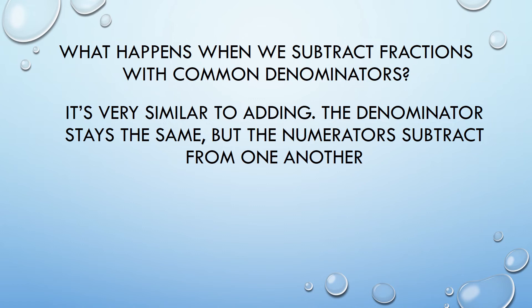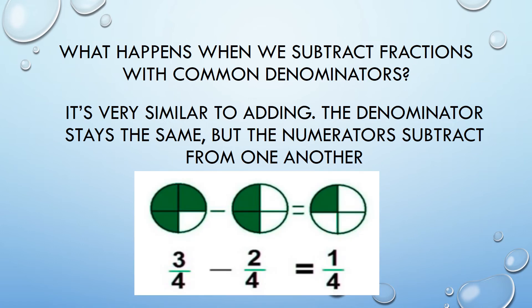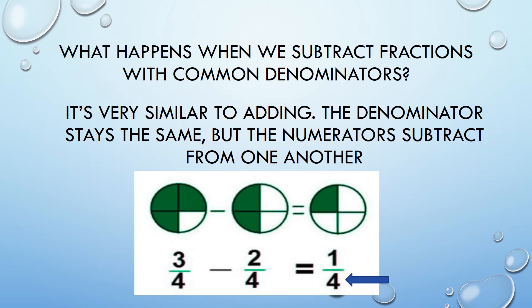What happens when we subtract fractions with common denominators? It's very similar to adding. The denominator stays the same but the numerators subtract from one another. So look at this: three-fourths minus two-fourths equals one-fourth. You'll notice the denominator stayed the same and the numerators were just subtracted to give us one-fourth.